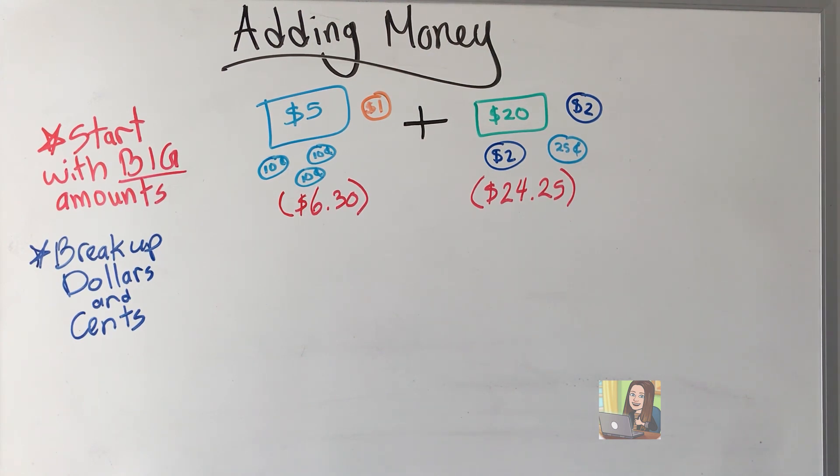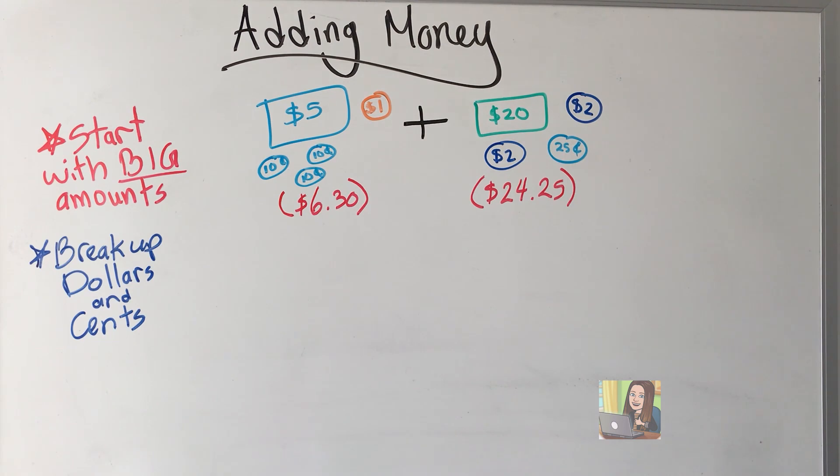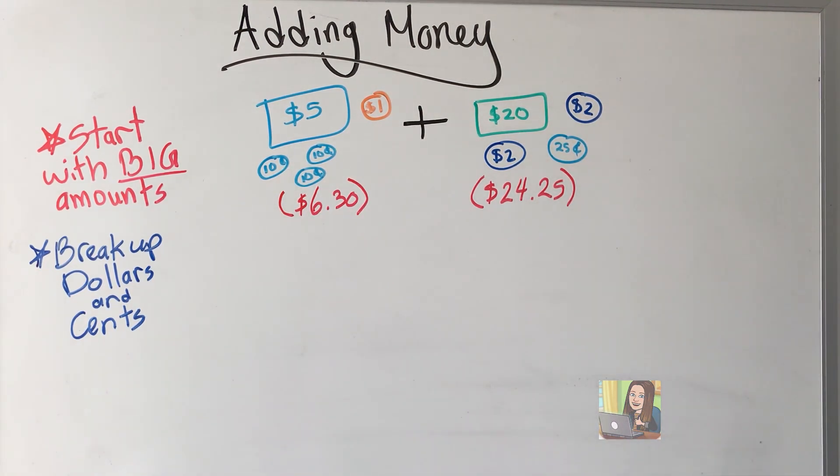Or how did I get those numbers? To start adding, we want to again start with the biggest amounts, add them together, as well as breaking it up by dollars and cents.